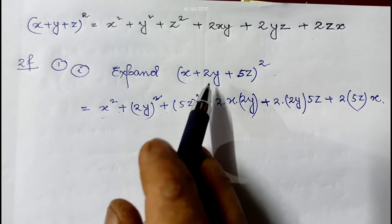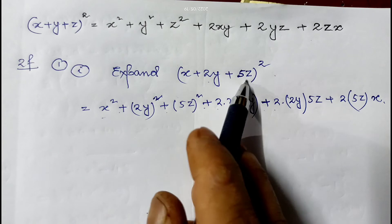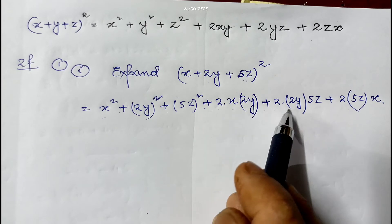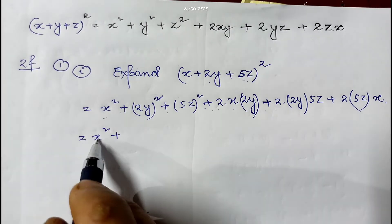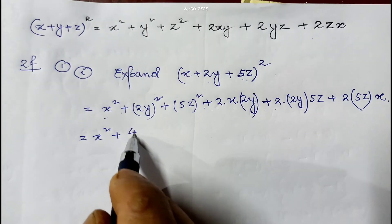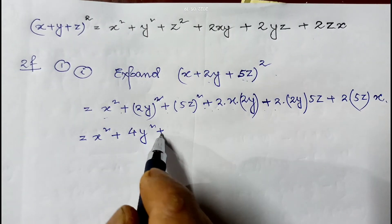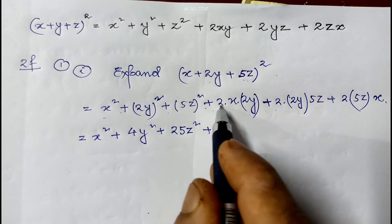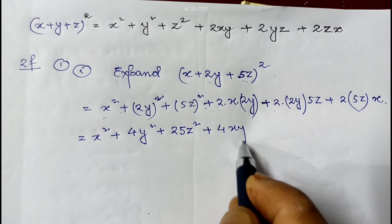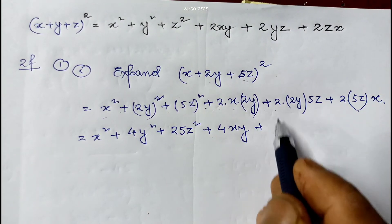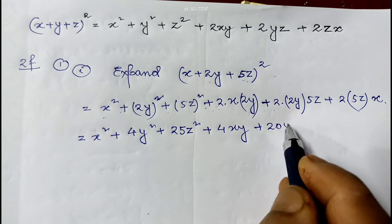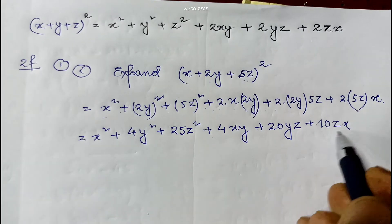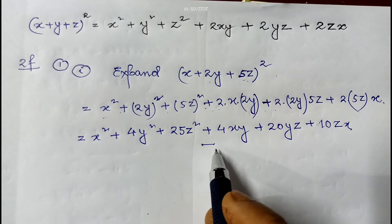So x² + (2y)² + (5z)² + 2·x·2y + 2·2y·5z + 2·5z·x. This gives x² + 4y² + 25z² + 4xy + 20yz + 10zx. It cannot be further simplified, so this is the required answer.